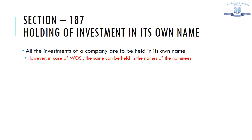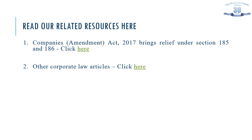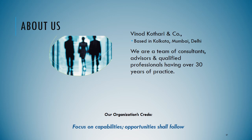Section 187 simply mandates that a holding company or a company which has made investments should hold them in its own name. There is an exemption in the case of a holding-subsidiary relationship, where the holding company can hold the investment in the name of its nominees. Thank you so much for being patient listeners — you can read our other related resources at the link given on the slides. We look forward to your feedback to improve further.